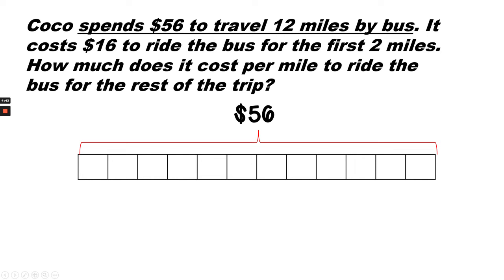We want to know how much she spends per each mile, so we should have 12 boxes: 1, 2, 3, 4, 5, 6, 7, 8, 9, 10, 11, 12.